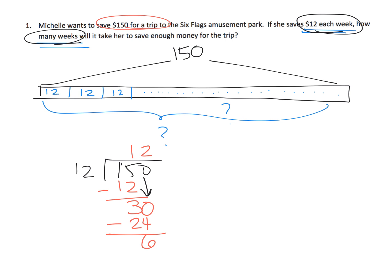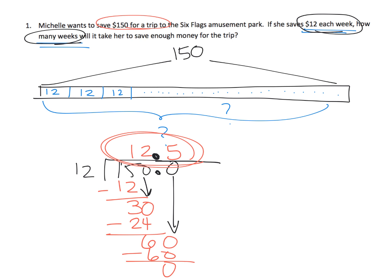And you have 6 left over. We could keep going — those 6 ones are really equal to 60 tenths, so we need a decimal right there. And then 12 times 5 is 60. So the answer is 12 and a half. Don't get confused — that 12 and a half has nothing to do with the fact that these are 12s, that's a coincidence. So the question is how many 12s fit in 150, and the answer is 12 and a half.